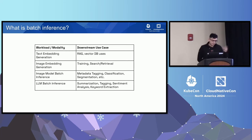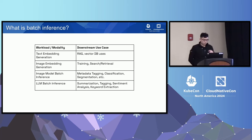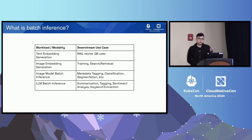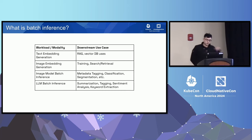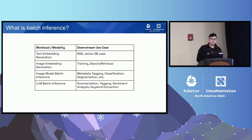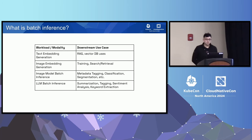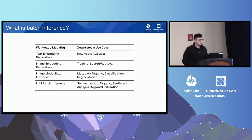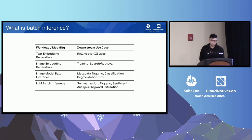Examples of batch inference include generating vector embeddings for RAG — you take text documents containing important context and store them in a vector database for retrieval later during real-time LLM inference. Or you might build a recommendation system where rather than predicting recommendations in real time, you run a periodic batch job that generates recommendations and caches them for later use in your application.